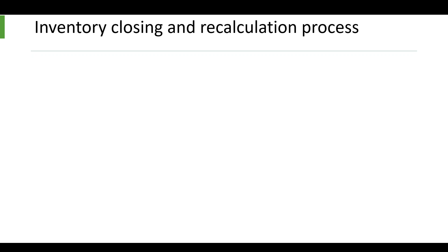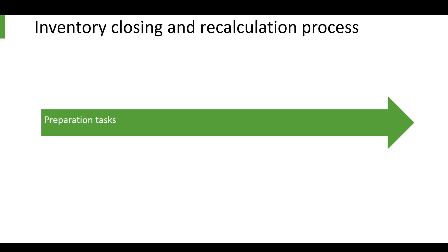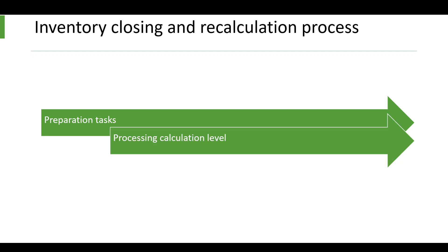In this slide we'll review the sequence of the inventory closing and recalculation process in a simplified view. When the inventory closing or recalculation job is started, the system will group the items into bundles that should be processed at the first bill of material level. The bundle is basically a group of items processed together, and the maximum number of items per bundle is defined in the inventory and warehouse management parameter. Then the system will move to the next step to process the calculation device.